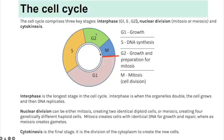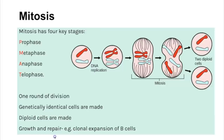The cell cycle for eukaryotic cells includes interphase, which is the longest stage. Interphase includes G1 (the cell increases in size and organelles double), S phase (DNA replication occurs), and G2 (further growth and preparation for mitosis, including an error-check — if errors in DNA replication are found, the cell is destroyed). Nuclear division is mitosis (in topic two). The final stage is cytokinesis, when the cytoplasm divides to create two new cells.